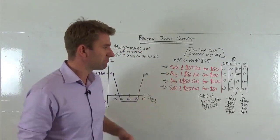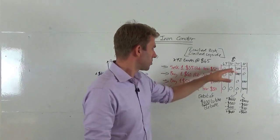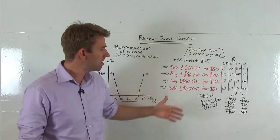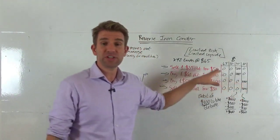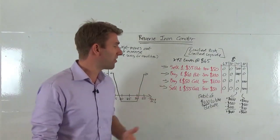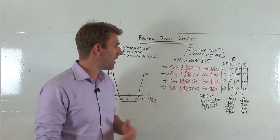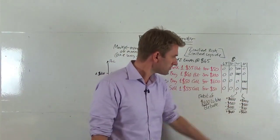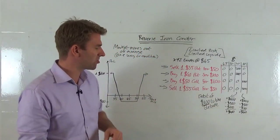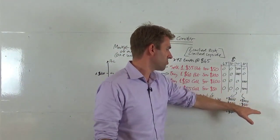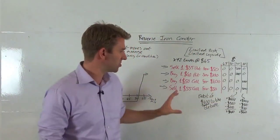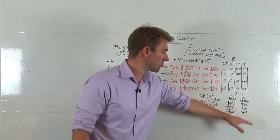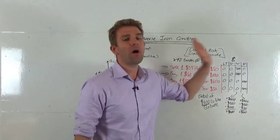The upside scenario is exactly the same, just flipped. The puts expire worthless. The $50 call is the good one — worth $10 times 100 shares = $1,000. But we lose $500 on the sold $55 call, which has $5 of value times 100 shares. So: $1,000 minus $500 minus the $100 net cost of the whole trade = $400 profit. Regardless of how high it goes, that pattern holds.